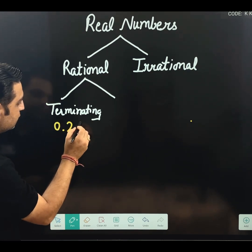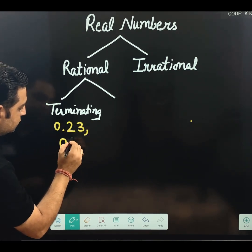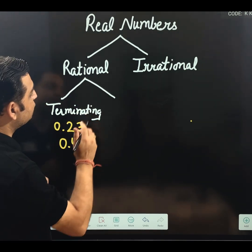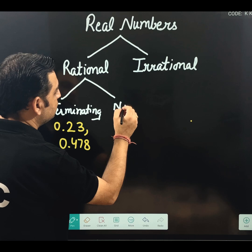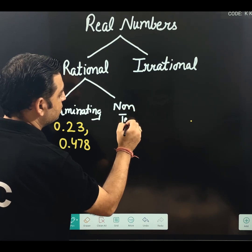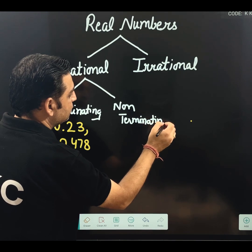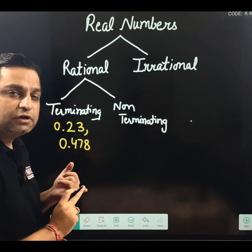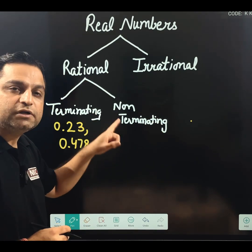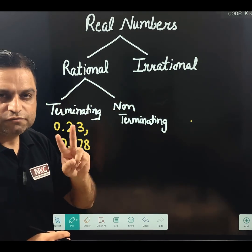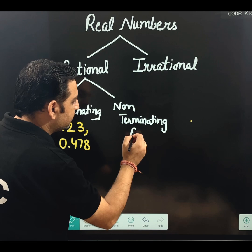And, see, terminating examples I have already given you. I am writing one or two examples as well. But, second option is, for rational, it comes non-terminating. And one word is used along with non-terminating. That is, non-terminating reoccurring or repeating. Both words are correct. I am writing repeating.